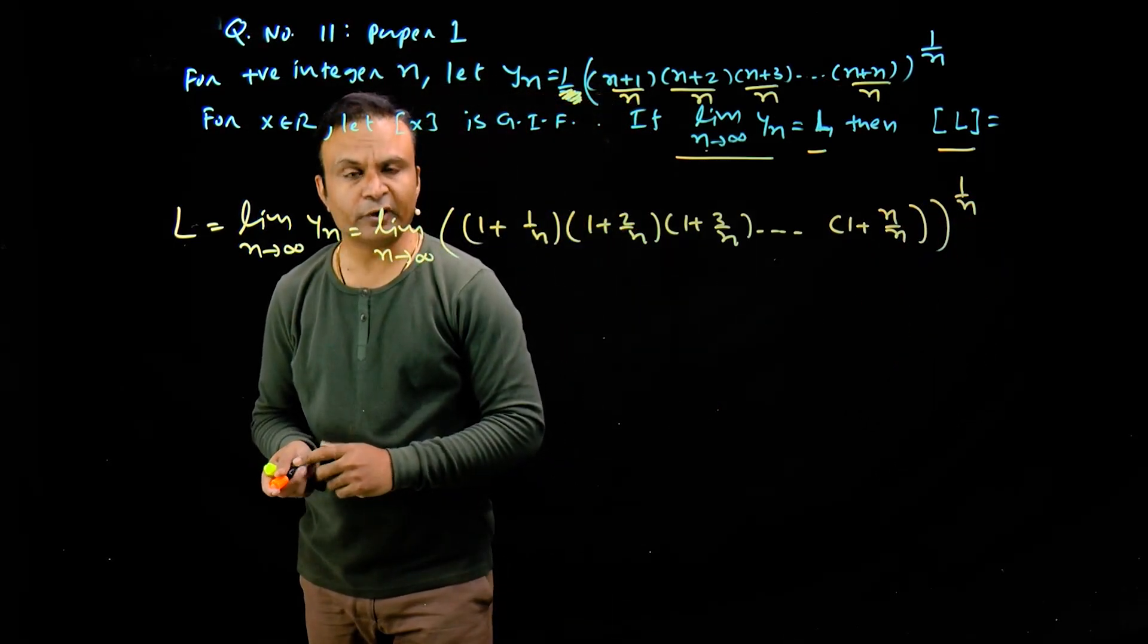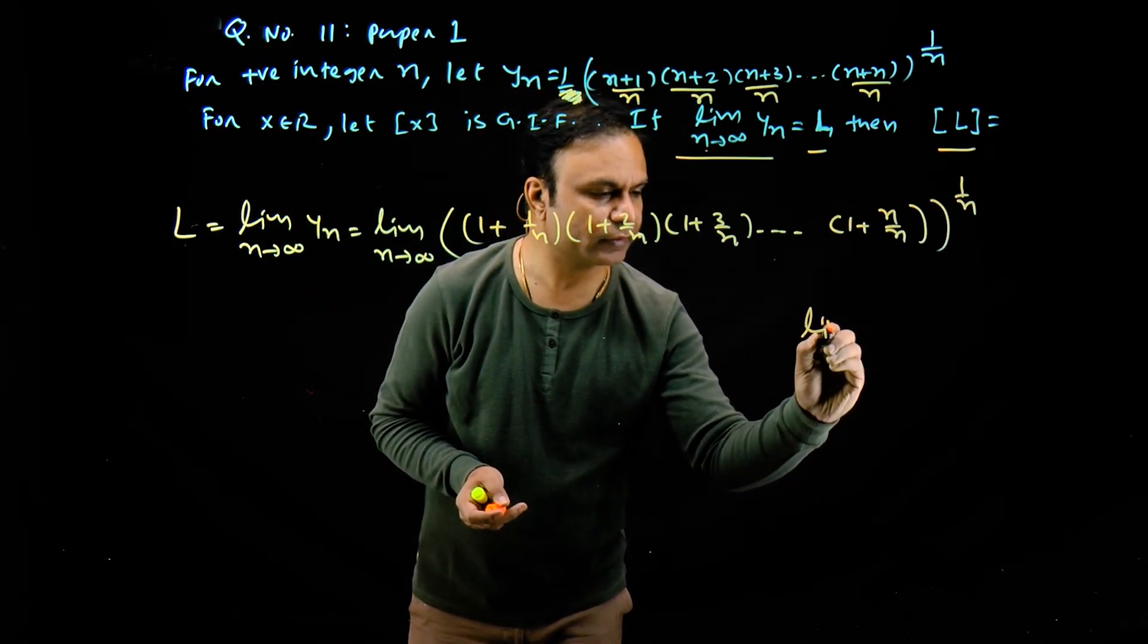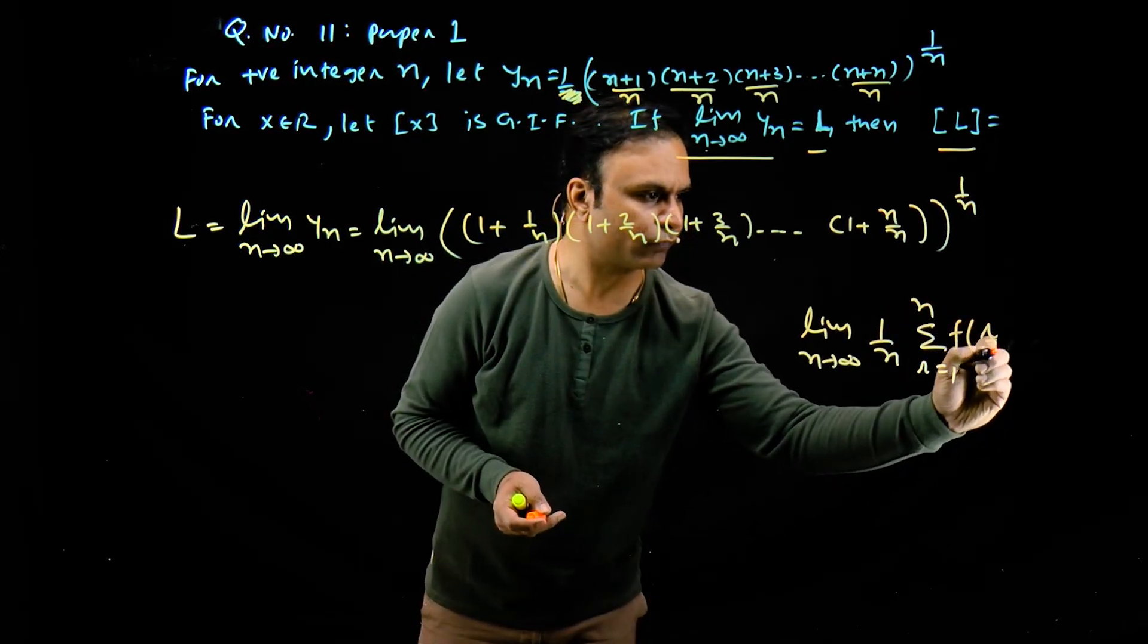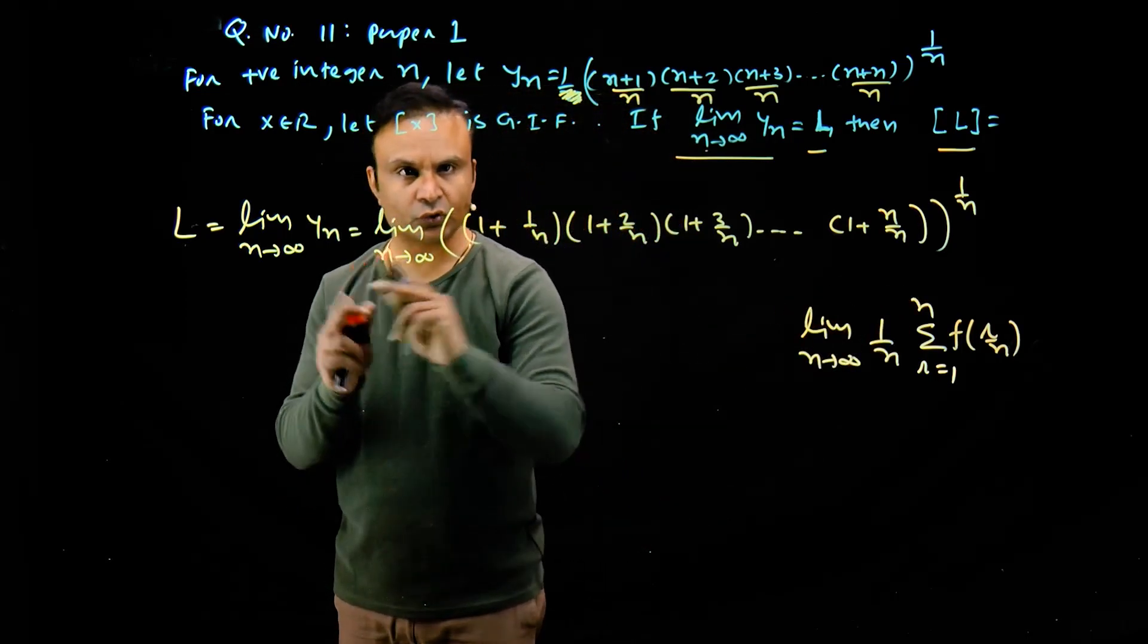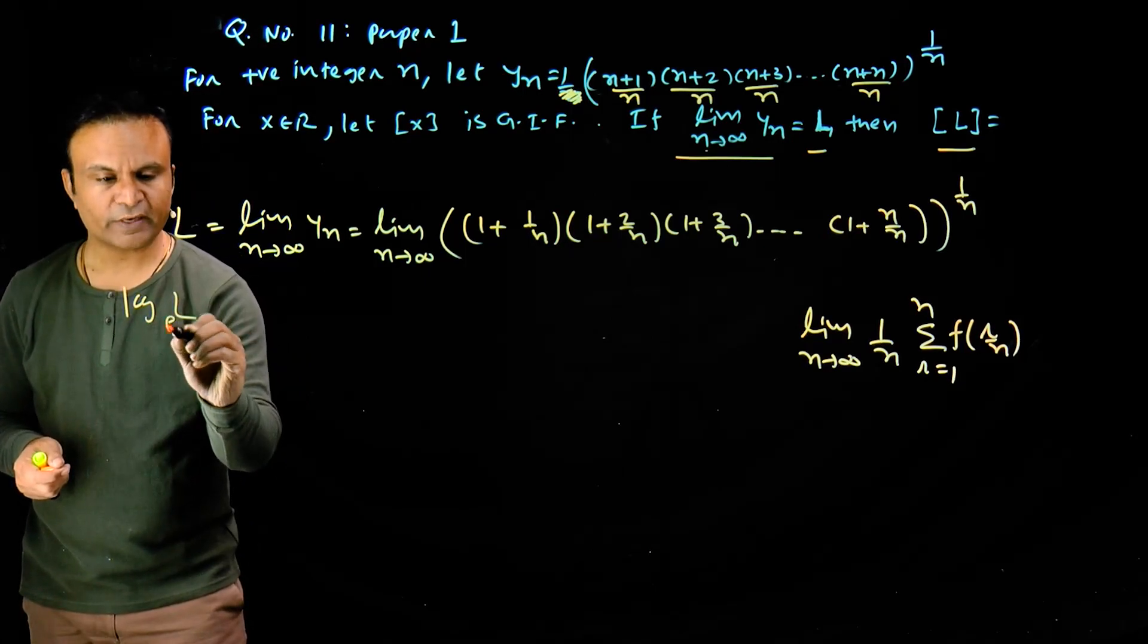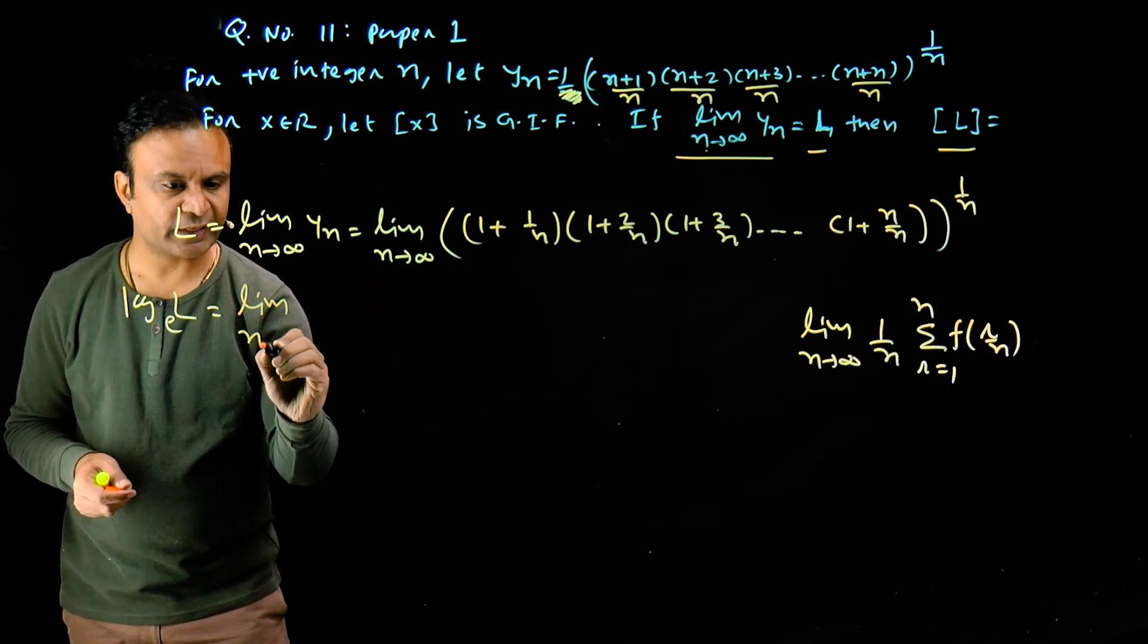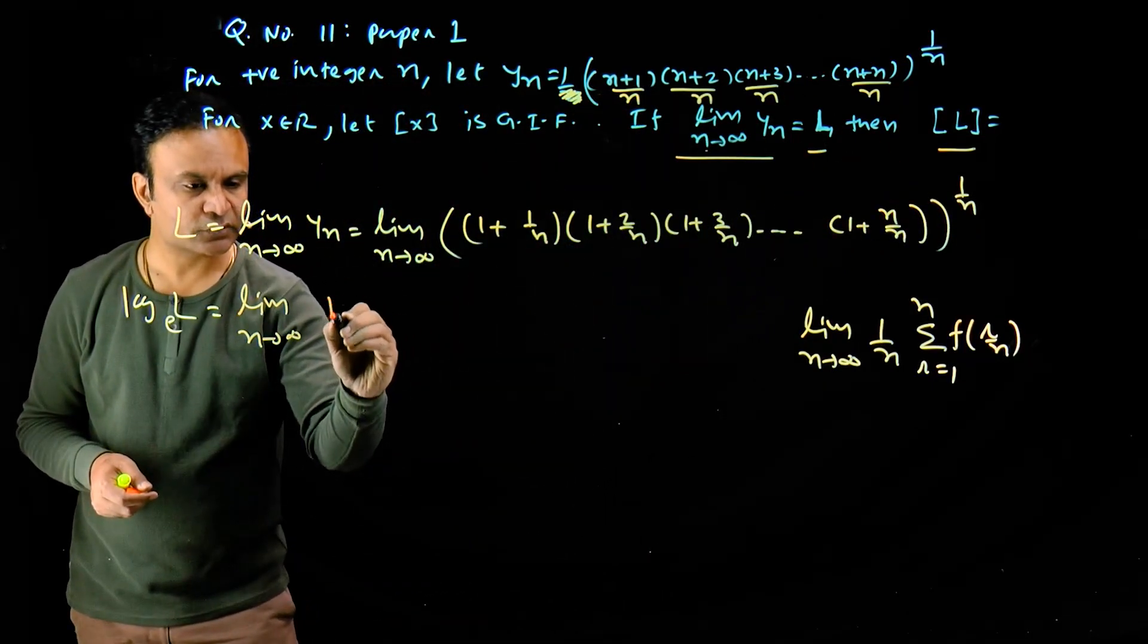Now the limit of sum formula is: limit n tends to infinity of 1 upon n sigma r equals 1 to n of f(r/n). Keeping this in mind, I will take logarithm on both sides. So we have log of l to the base e equals, logarithm will go inside the limit.